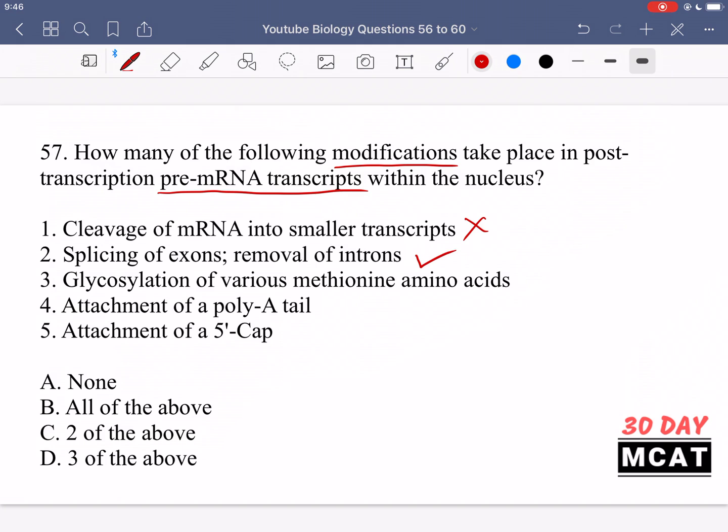So option two is correct. We splice the mRNA - we keep the exons and remove the introns. The introns stay inside the nucleus and the exons exit the nucleus. Yes, this is an actual modification that happens to pre-mRNA before it's mature.